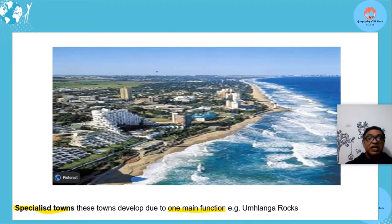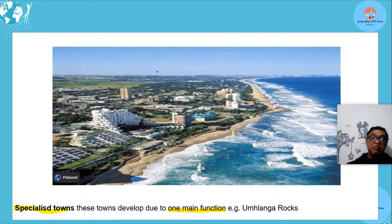Specialized towns develop due to one main activity or function. For example, Umhlanga Rocks is a recreation town — hotels, restaurants, entertainment, and amusement centers are found there. If you take away the recreation and tourism, this place would not survive. The specialized function doesn't have to be recreation; it could be mining or any other dominant activity.